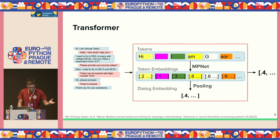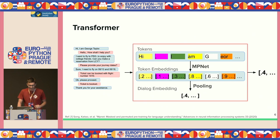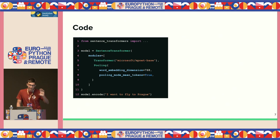To start with, we'll be using MPNet — it's a regular transformer encoder. In code, I'm showing short snippets with sentence transformers — it's super simple. We define a sentence transformer with two modules: a transformer module using MPNet, and a pooling module where the dimensionality is 768. We specify mean pooling to take the average of all tokens in the conversation.